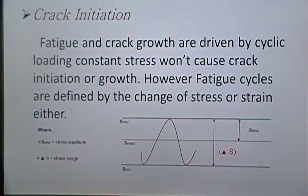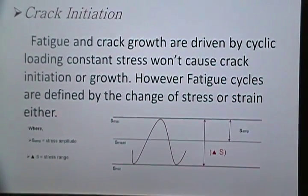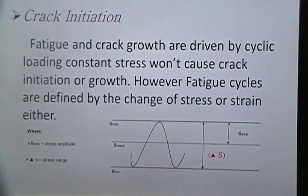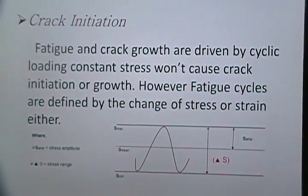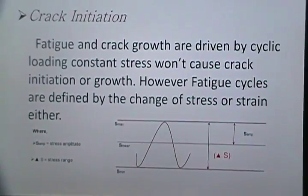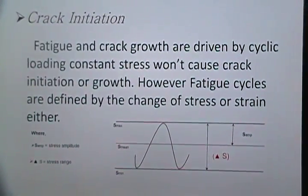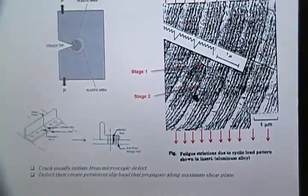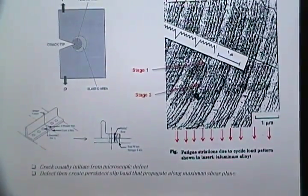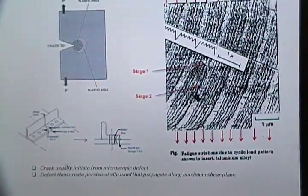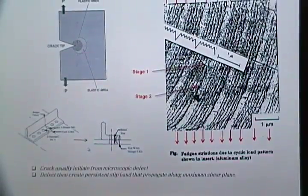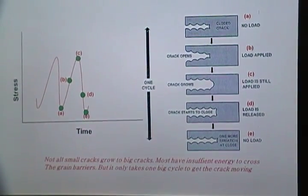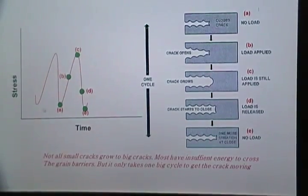Physics of fatigue — crack initiation: fatigue and crack growth are driven by cyclic loading. A constant stress will not cause crack initiation or growth. However, fatigue cycles are defined by a change of stress or strain, either by simple stress amplitude or stress range. There are a few pictures showing how the crack starts — Stage 1 and Stage 2 — with crack tips and an elastic area. Examples include an aircraft bracket where the crack starts. Crack growth shows one cycle with stages A, B, C, D.